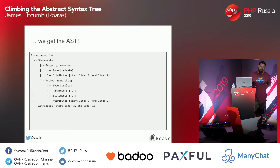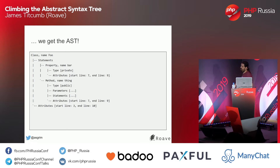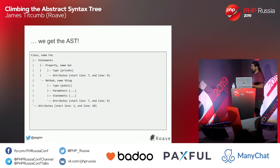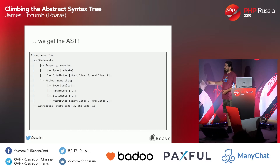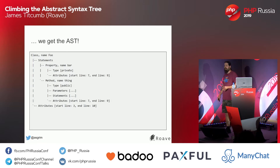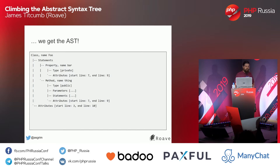Given a class structure — class Foo with a private property bar and a function — we get an AST that shows all the information: the visibility of the bar property is private, it starts on line seven and ends on line nine. The method node gives you types, parameters, statements, all the attributes and metadata. That allows us to do a lot of introspection.